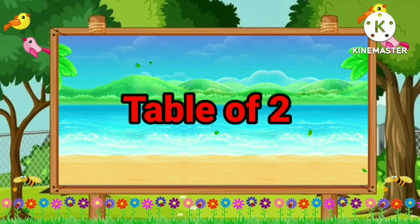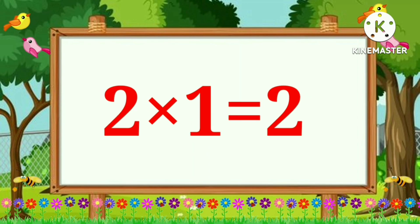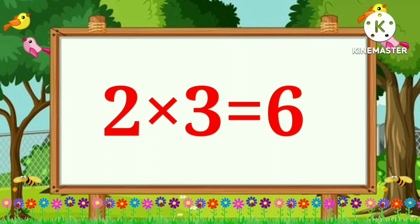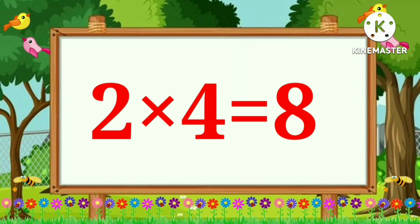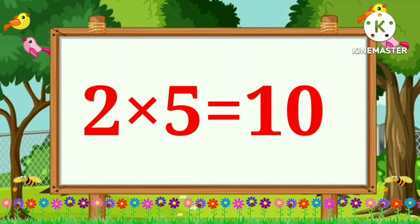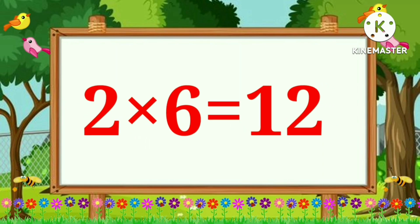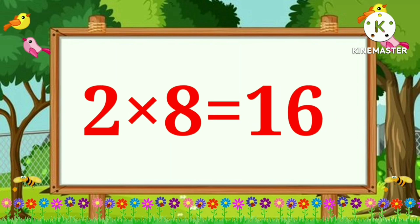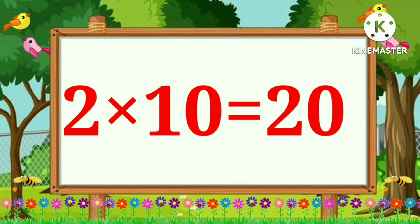Table of Two. Two ones are two. Two twos are four. Two threes are six. Two fours are eight. Two fives are ten. Two sixes are twelve. Two sevens are fourteen. Two eights are sixteen. Two nines are eighteen. Two tens are twenty.